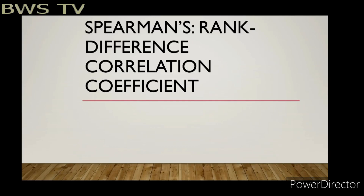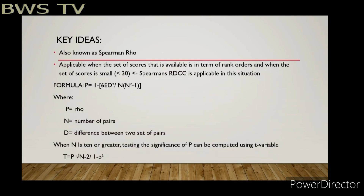Today we're going to talk about Spearman's Rank Difference Correlation Coefficient, also known as Spearman's Rho. It is applicable when the set of scores is in terms of rank orders and when the set of scores is small — specifically fewer than 30. The formula for Spearman's Rho is: Rho equals 1 minus 6 times the summation of D squared, all over N times (N squared minus 1).